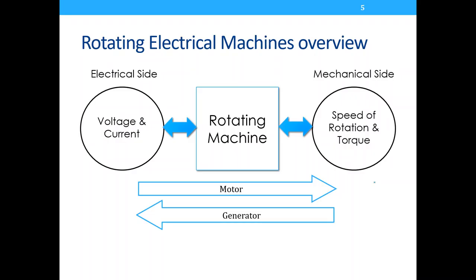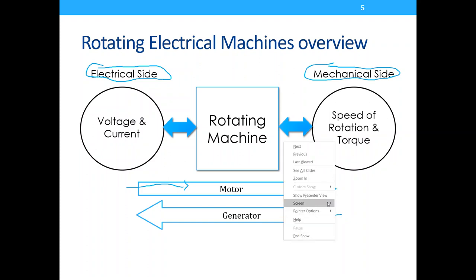A rotating machine has its mechanical side and its electrical side, with energy flowing between them. Energy flowing from electrical to mechanical is a motor. Energy flowing from mechanical to electrical is a generator.